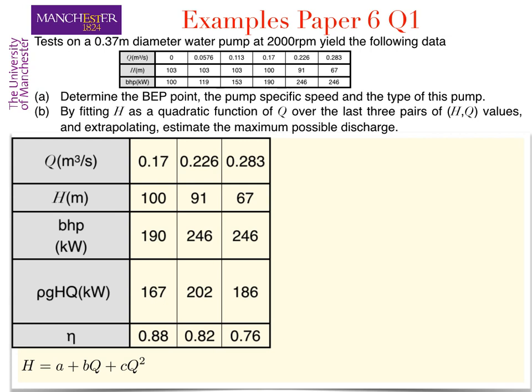Into which we can substitute our three points. For a flow rate of 0.17 we have a head of 100, and so 100 is a plus 0.17b plus 0.17 squared c which can be extracted as a plus 0.17b plus 0.029c.